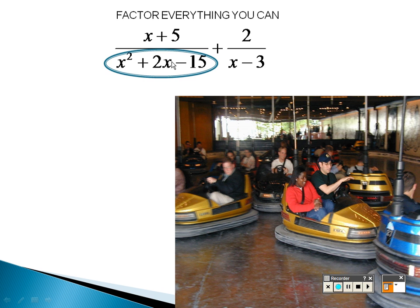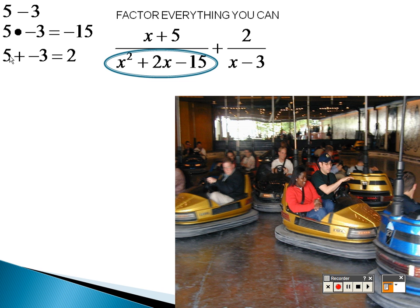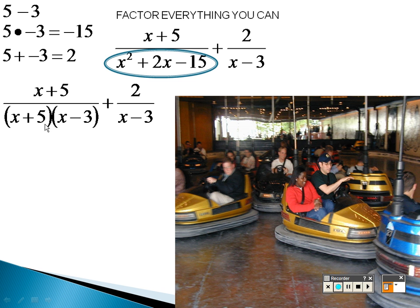What multiplies to give you negative 15 that adds to give you 2? 5 and negative 3, because 5 times negative 3 is negative 15, and 5 plus negative 3 is 2. Now that I have that factored, I can see what I want to put on the bottom to make a common denominator.